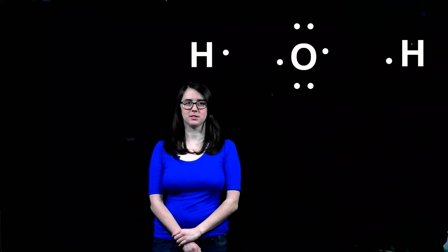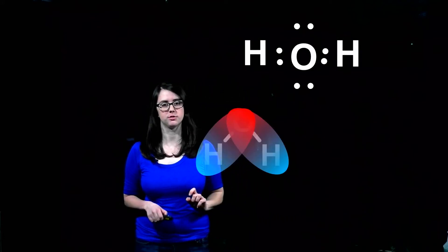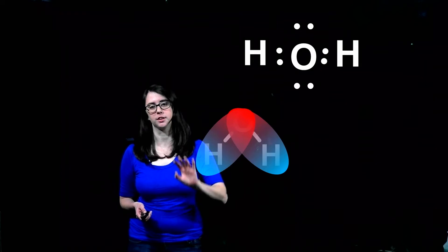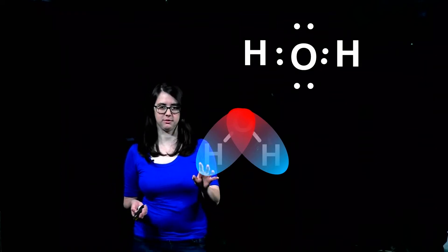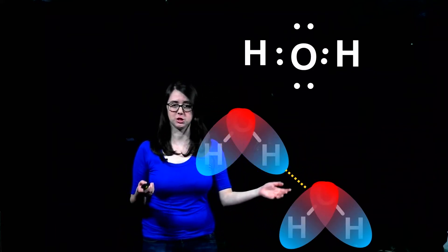You'll remember that covalent bonds share electrons between two atoms. In some cases, however, one atom pulls the electrons closer to itself, creating a dipole with a negative end and a positive end. When something from the positive end of the bond, so in this case the hydrogen, reaches out to the negative end of another molecule, this forms a hydrogen bond.